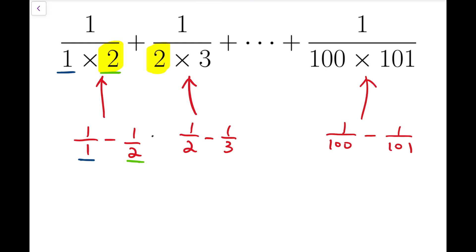So notice that I'm actually adding all of these fractions, and you can imagine that if I start with 1 over 1 minus 1 over 2, and then add it by 1 over 2 minus 1 over 3, the next pair would be 1 over 3 minus 1 over 4, and we can keep going, and at last we have plus 1 over 100 minus 1 over 101.